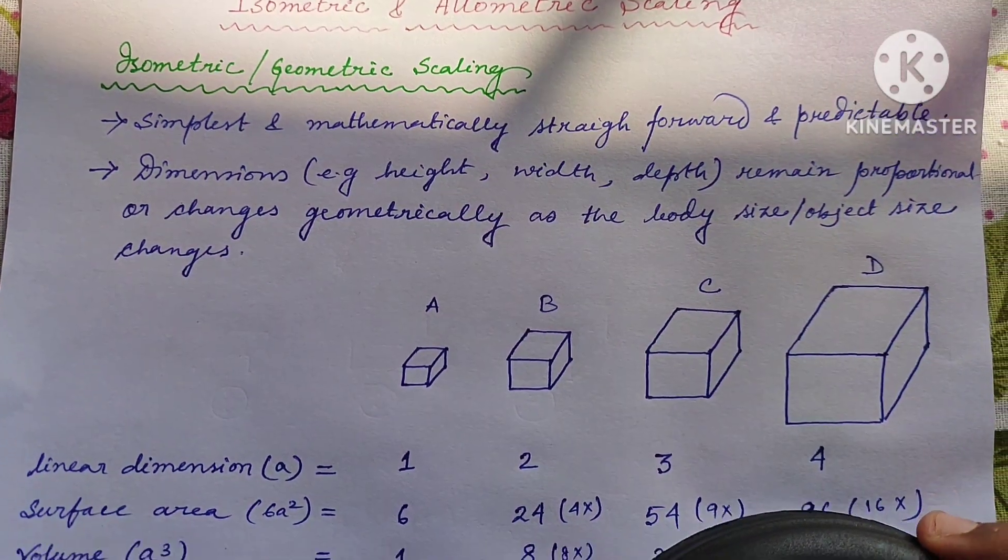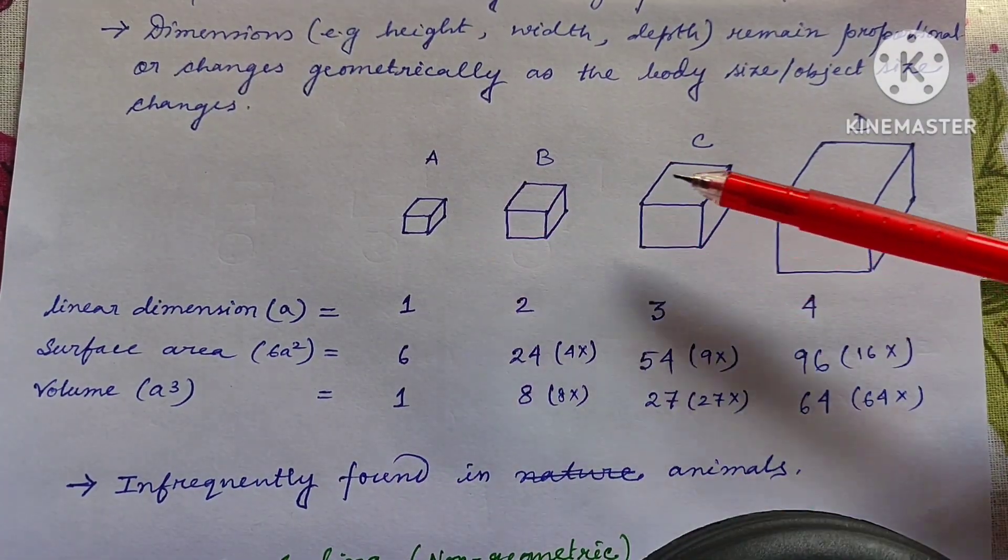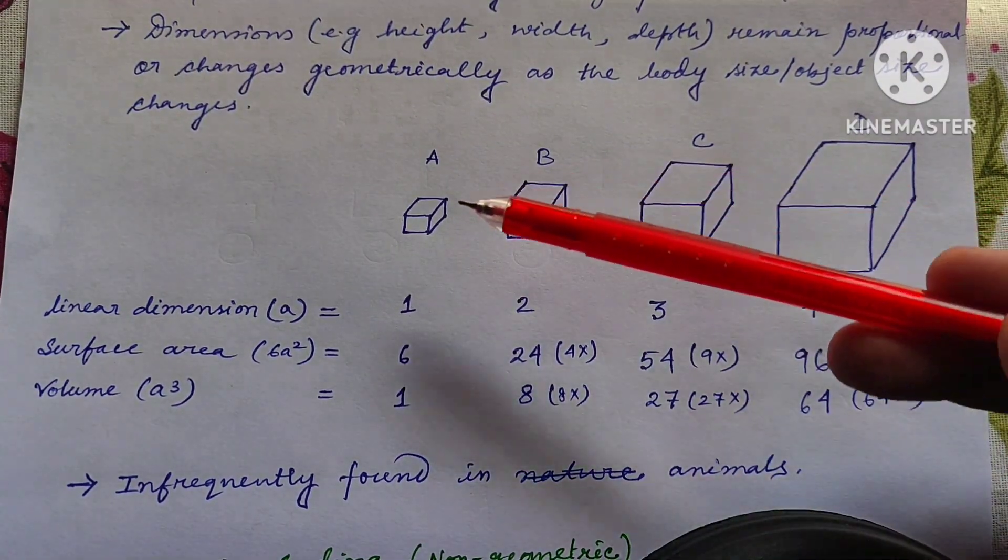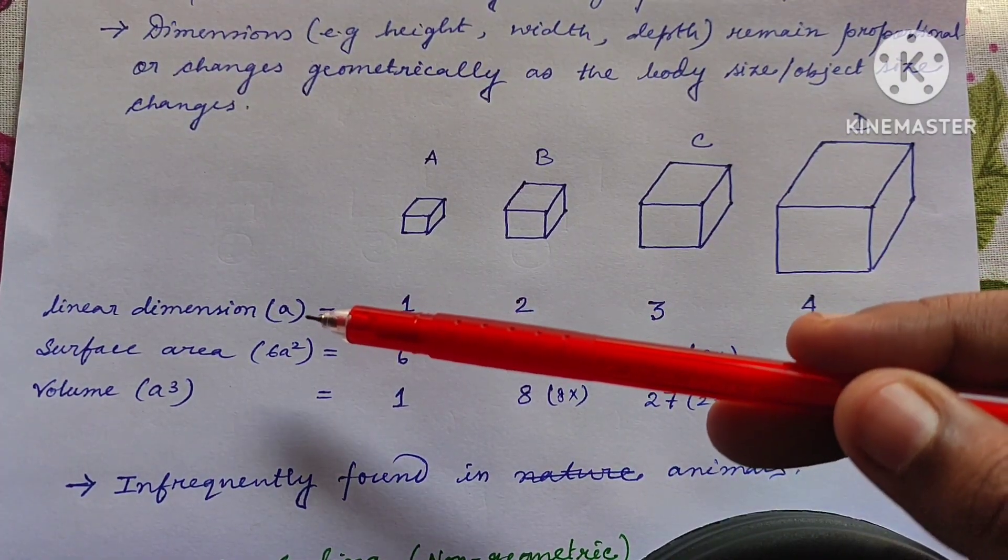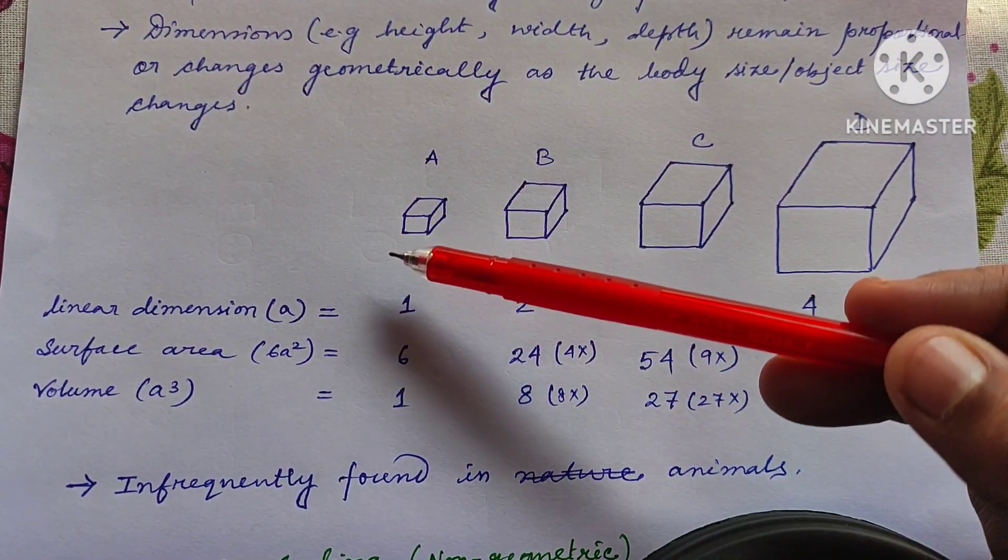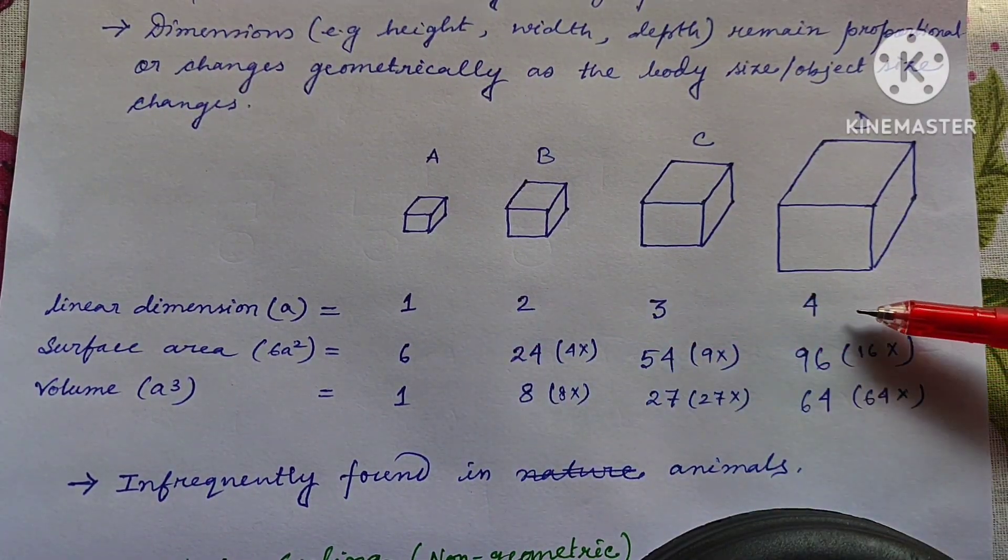So let's get it clear through an example. Here I have drawn 4 different sized cubes A, B, C and D whose linear dimension, that means the length of any side of the cube, changes from 1, 2, 3 then 4 unit.